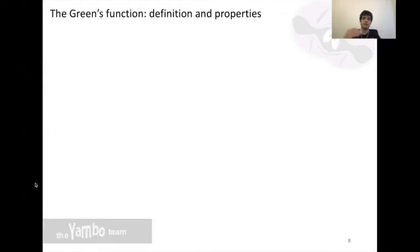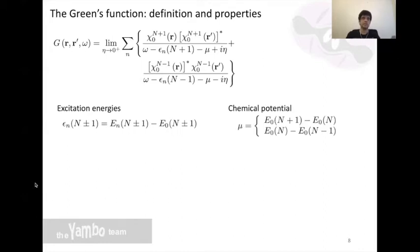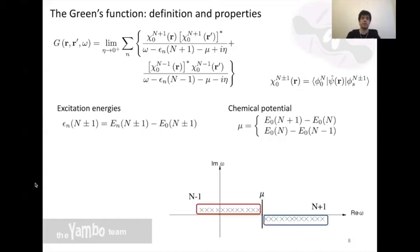What is inside this expression? In the denominator you have the excitation energies of the N+1 and N-1 particle system and the chemical potential. For the chemical potential we assume it to be constant when going from a system with N particles to either N+1 or N-1 particles. In the numerator you have overlap matrix elements.